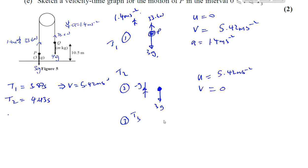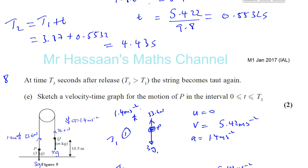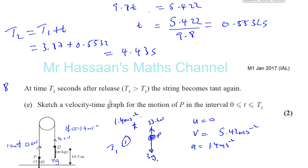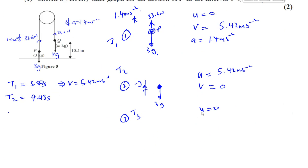In the third phase — from time T2 onwards — the initial speed is zero as it's at the top of its flight, and it's going to start coming down again. T3 is bigger than T1. The string becomes taut again, so it's going to reach that same speed of 5.42 metres per second, but now going downwards. It goes up 10.5 metres where the string is tight, decelerates to rest, then moves back down until it reaches that same point where the string becomes taut.